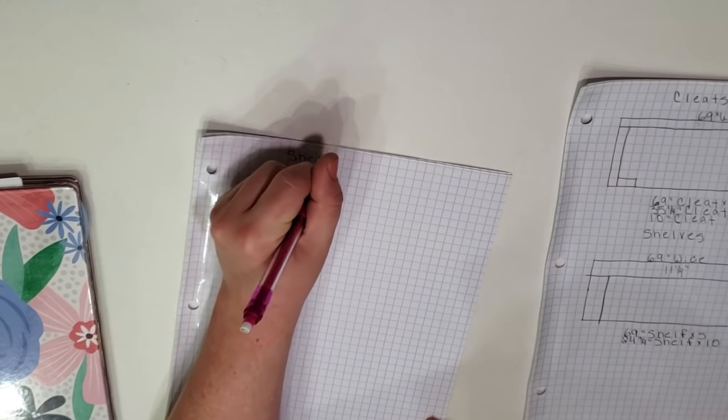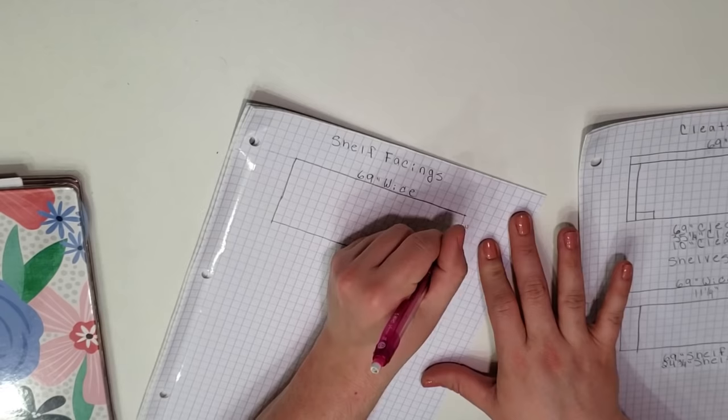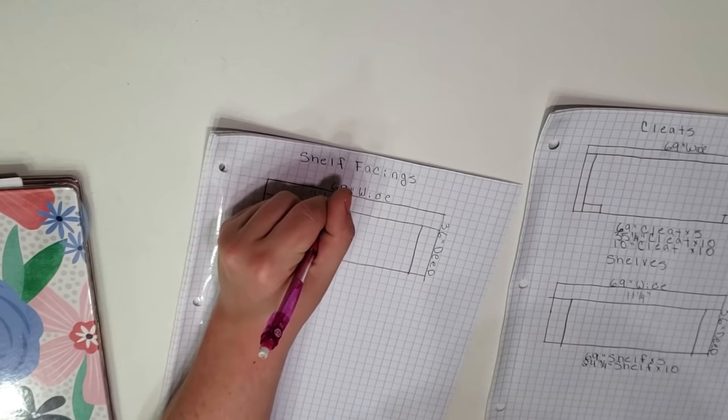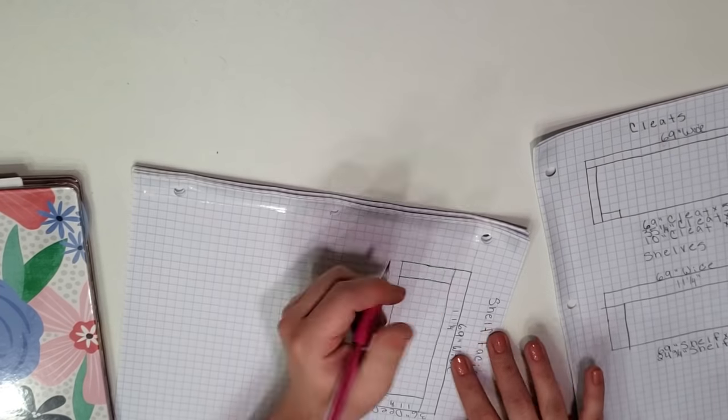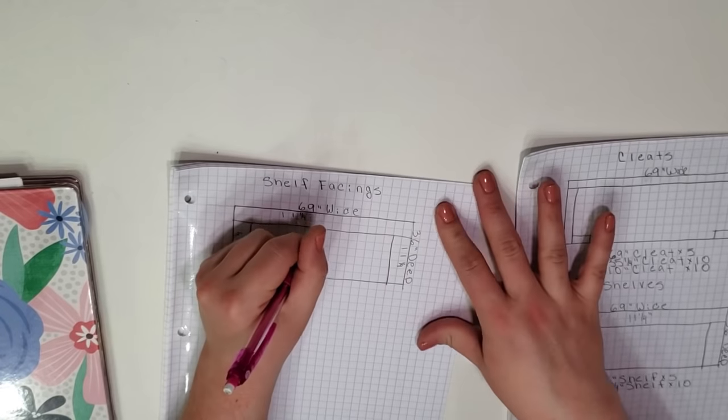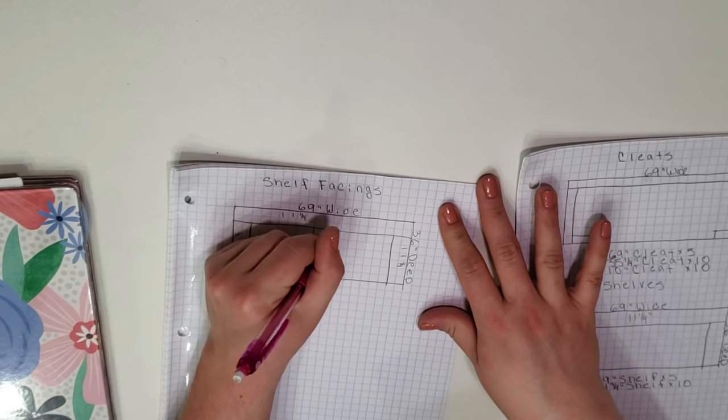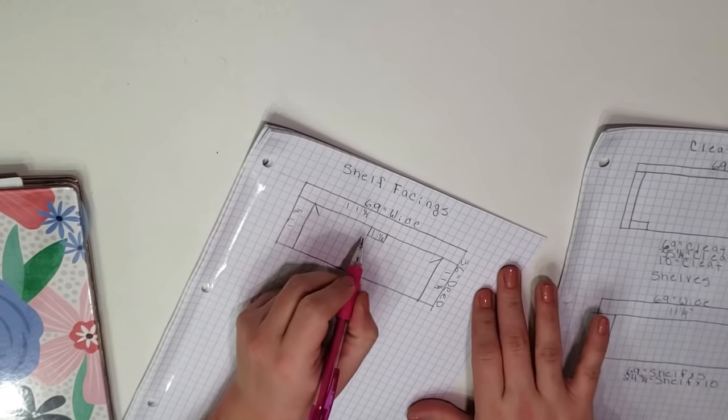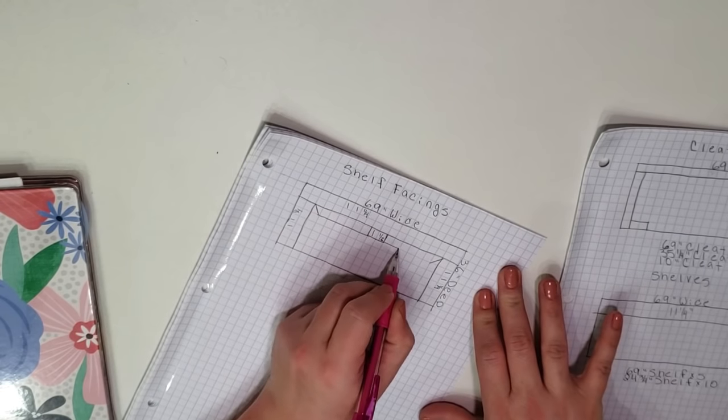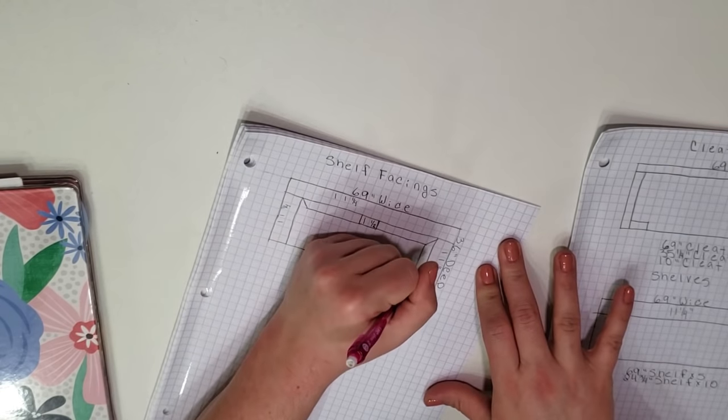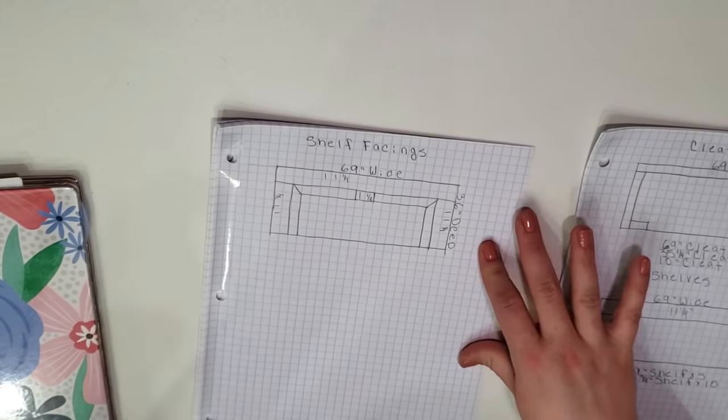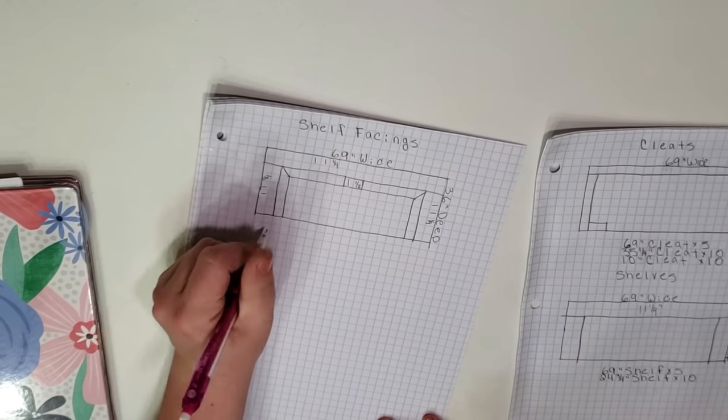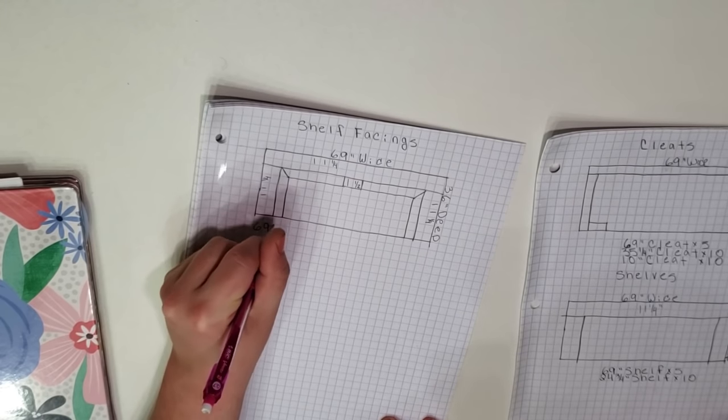Next I need to calculate the pieces that I will need for the shelf facing. I decided that I would use one by twos for these as well. When these get installed the one by twos are actually three quarters of an inch thick, so that'll add three quarters of an inch to the depth of the shelves making them 12 inches deep total. This is why I decided not to make the plywood 12 inches deep since this will add that extra three quarters of an inch.